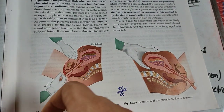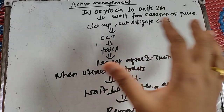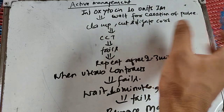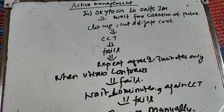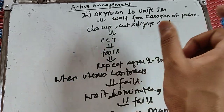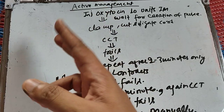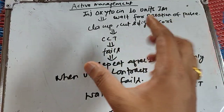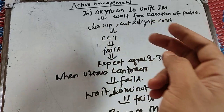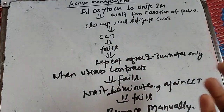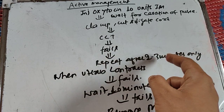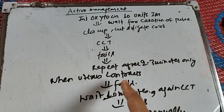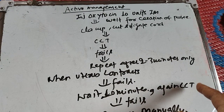Traction should only be performed when the uterus contracts — never apply excessive tension. In active management, after delivery we give oxytocin 10 IU IM, wait for cord pulsation to cease, clamp and divide the cord, then perform controlled cord traction only during uterine contractions. If the placenta is not delivered, repeat controlled cord traction after 2 to 3 minutes. If still unsuccessful, wait 10 minutes and attempt controlled cord traction again, but only when the uterus contracts.